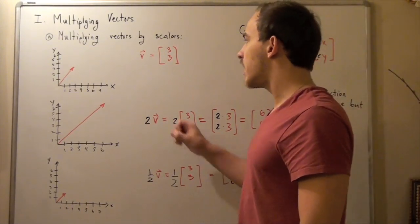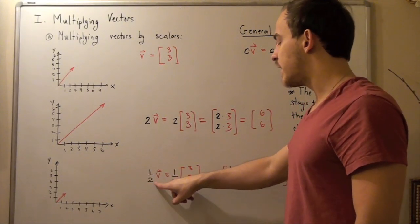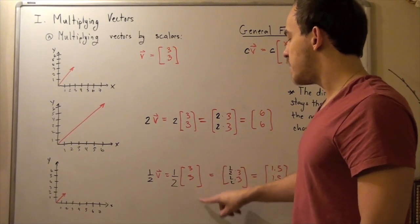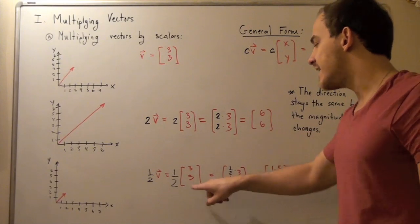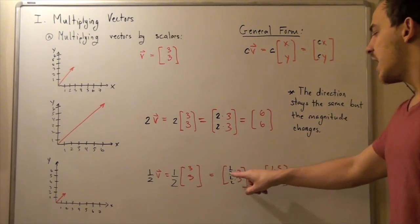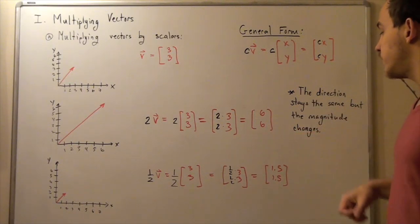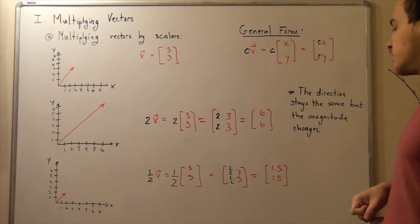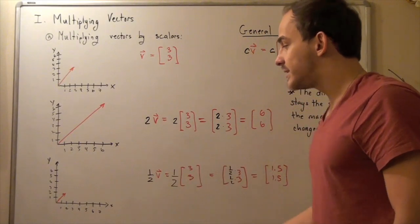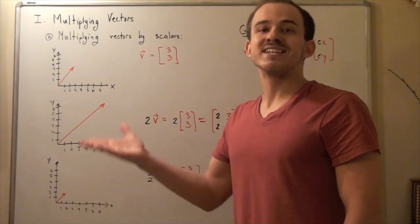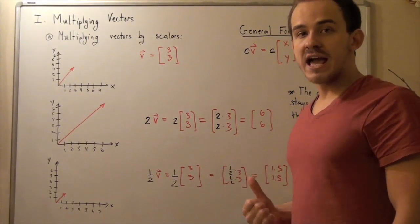Now let's suppose we multiply the same vector by one half. So, one half times our vector V equals one half times our matrix (3, 3). We distribute the half to our x-coordinate and y-coordinate: one half times 3 and one half times 3, giving us a new x-coordinate of 1.5 and a new y-coordinate of 1.5. The direction of the vector remains the same, but the magnitude is now half of what it was before.